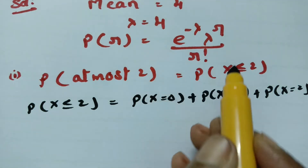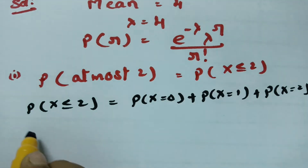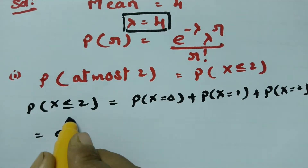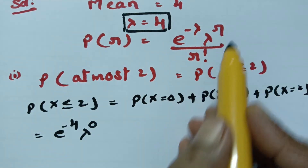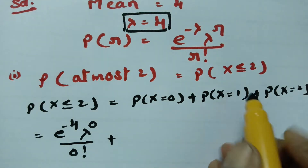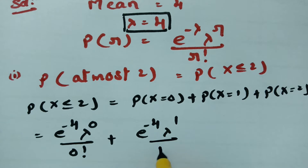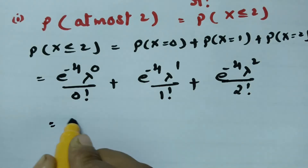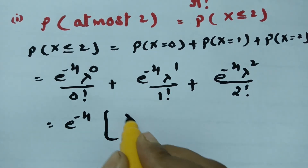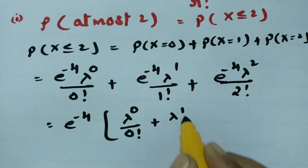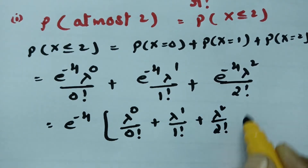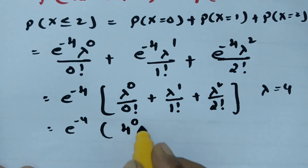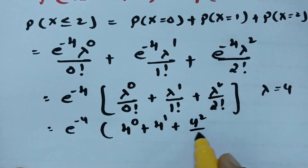Substituting into the formula with lambda = 4: for R = 0, we get e^(-4) × 4^0 / 0!; for R = 1, we get e^(-4) × 4^1 / 1!; and for R = 2, we get e^(-4) × 4^2 / 2!. This simplifies to e^(-4) × (1 + 4 + 16/2).